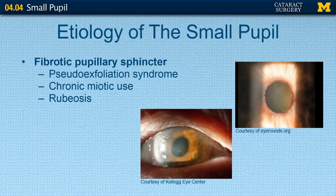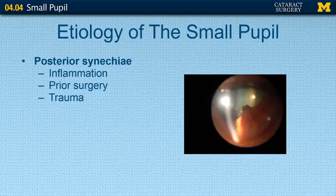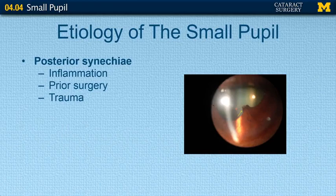In glaucoma patients on chronic miotic use, the pupil may be scarred into a smaller position. In cases of rubeosis, which can occur in any ischemic condition or under inflammation, the pupil will often not dilate very well. Posterior synechiae is when the iris tissue is adherent to the lens, and this occurs when inflammation is present — from trauma, surgery, or inflammation itself.